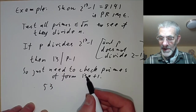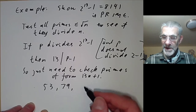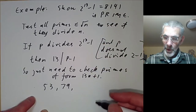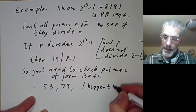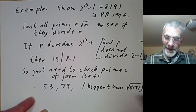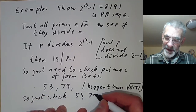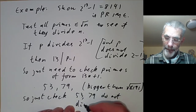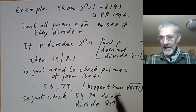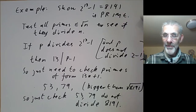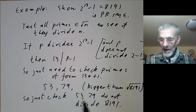So we just check that 53 and 79 do not divide 8191 — this is an easy piece of long division. As you can see, this has sped up the primality test by a factor of about 10: instead of having to check more than 20 primes, we just need to check two.